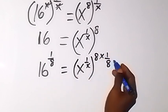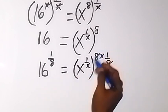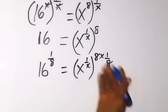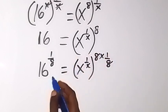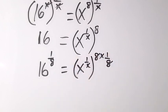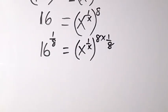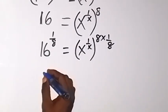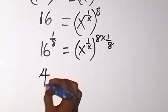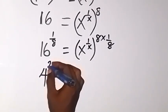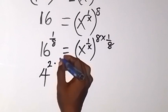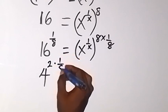Then on this side we can say this is 1 over 8. And now we can rewrite 16 as 4 squared, then times 1 over 8.